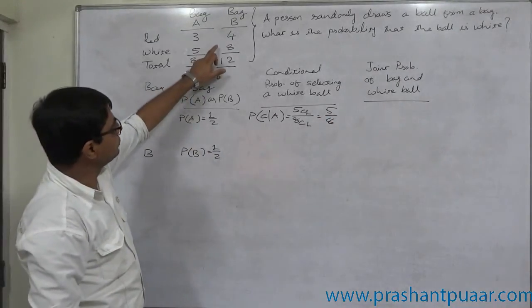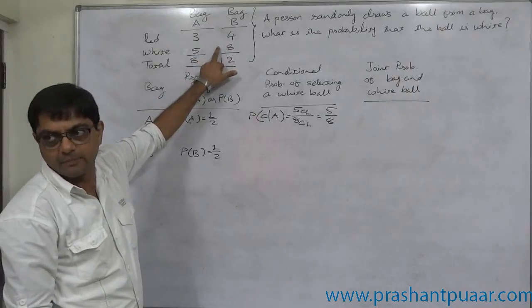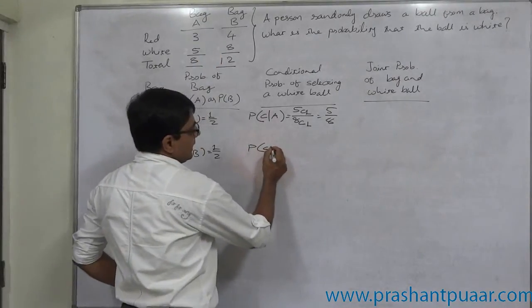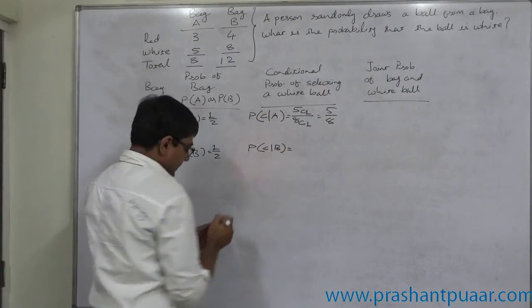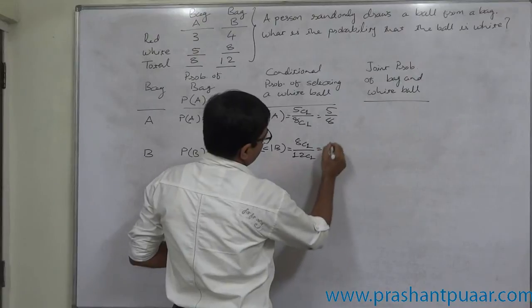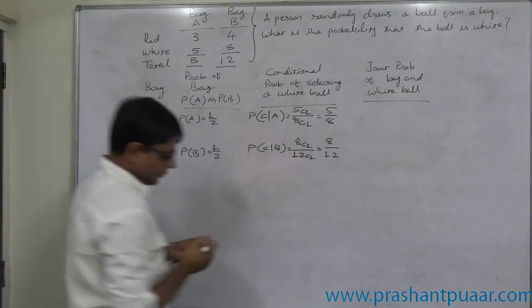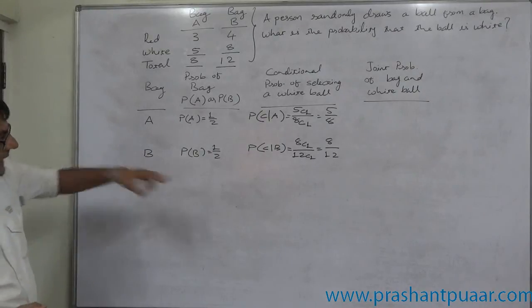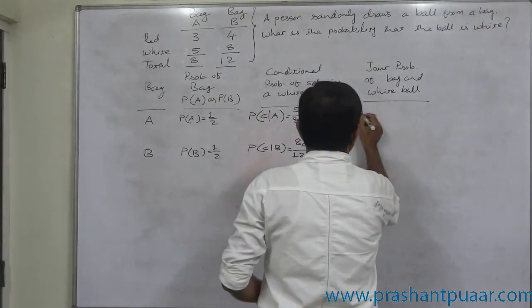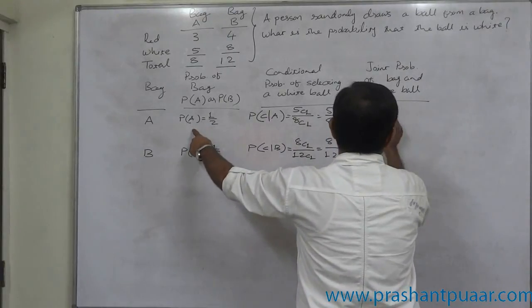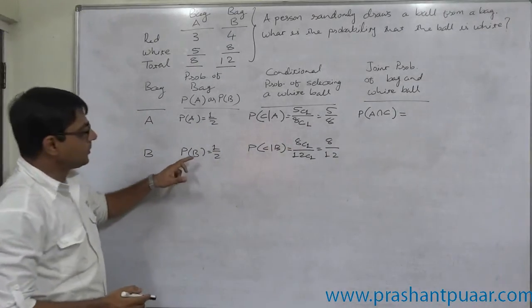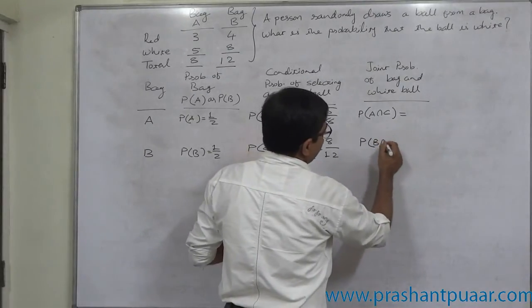In the case of selecting a ball from bag B, the probability of selecting a white ball — that is P(C given B) — has favorable cases of 8C1 divided by 12C1. So the probability comes to 8 by 12. Now, either of these can happen and a white ball can be selected — from bag A and a white ball, or from bag B and a white ball.